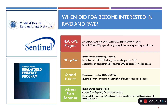When did FDA become interested in real-world evidence and real-world data? The reality is that they've always been interested in this. Adverse event reporting, adverse event data, and data collected in post-market surveillance studies are all ways that FDA has been monitoring real-world use of medical products since the beginning of their regulatory oversight. Historically, it's only been through adverse event reporting or post-market surveillance studies, but the need for more data on how products are actually used has led to legislative changes impacting FDA policy.